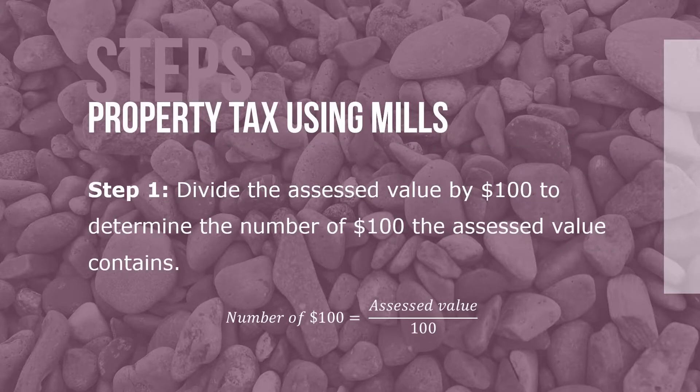Here are the steps to calculating property tax using mills. Step 1: Divide the assessed value by $100 to determine the number of $100 the assessed value contains. The number of $100 equals assessed value divided by 100.